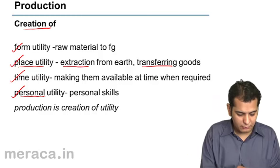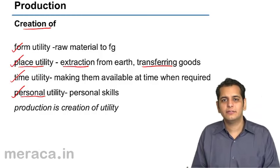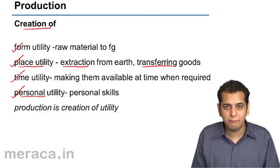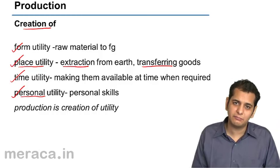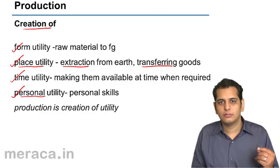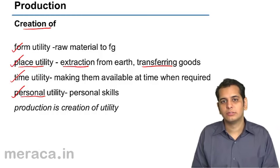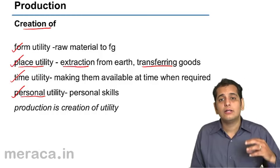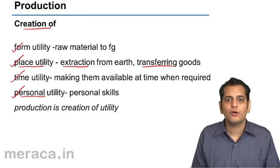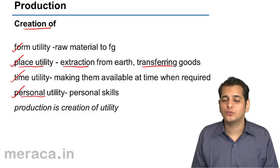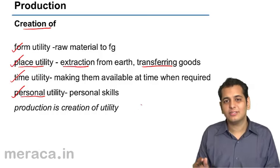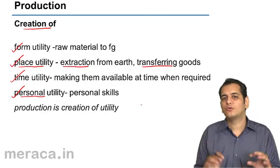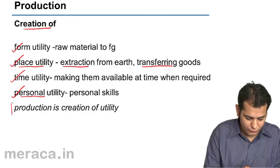Finally, we have personal utility. Personal utility is nothing but personal skills, talents, experience, and judgment — these things help people provide utility. Doctors, lawyers, chartered accountants, actors, musicians, and sports persons like cricketers all give personal utility because they have the required skills and talents to be useful for others. So production is nothing but creating utility. Production does not mean creating matter — it only means creating utility out of the available matter.